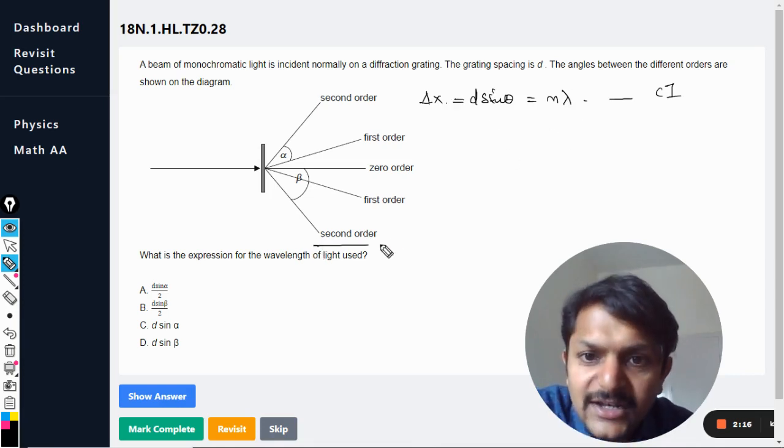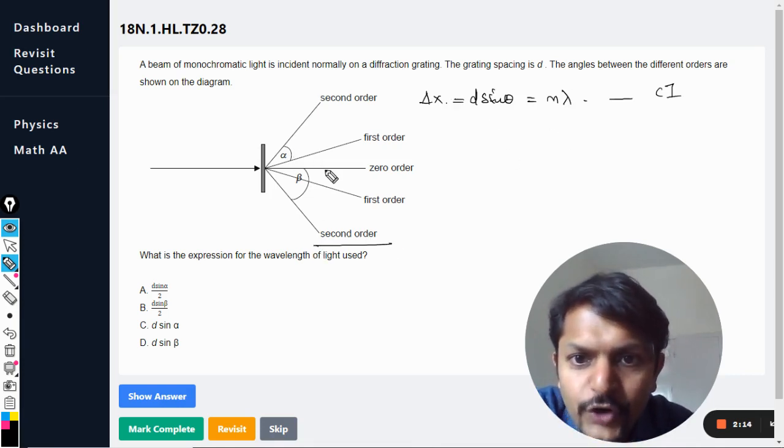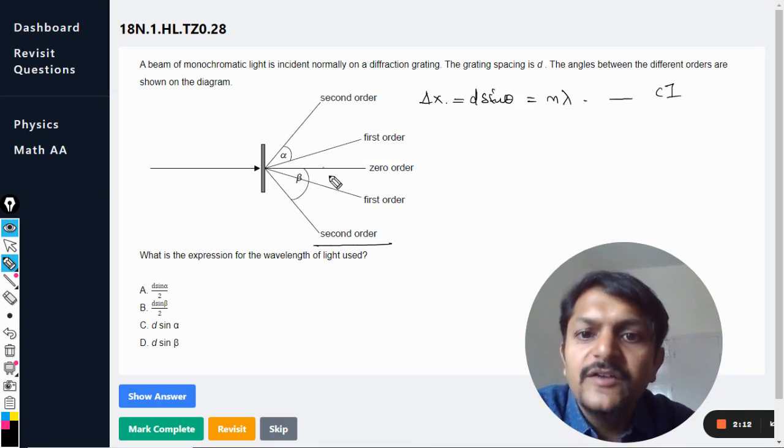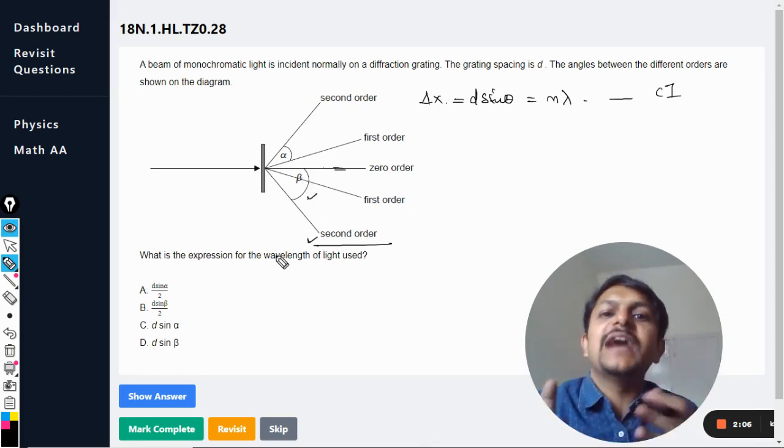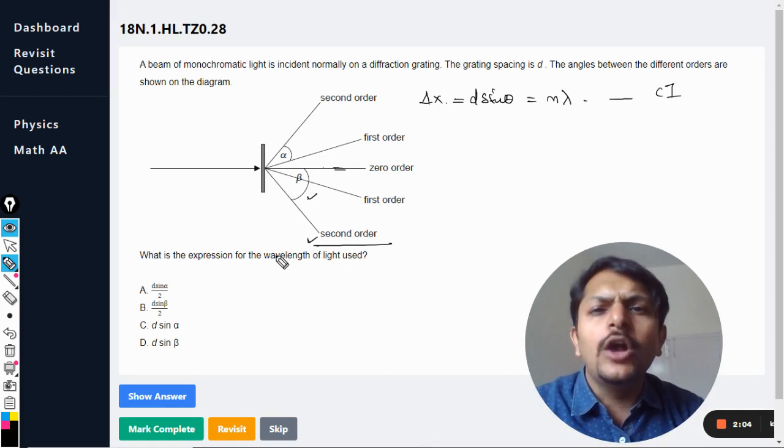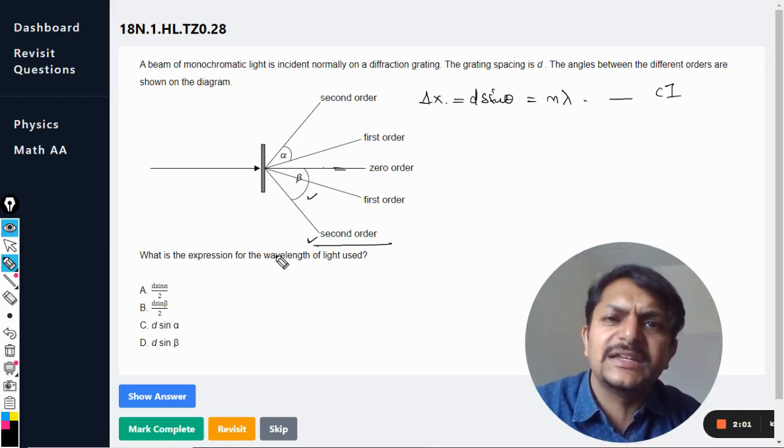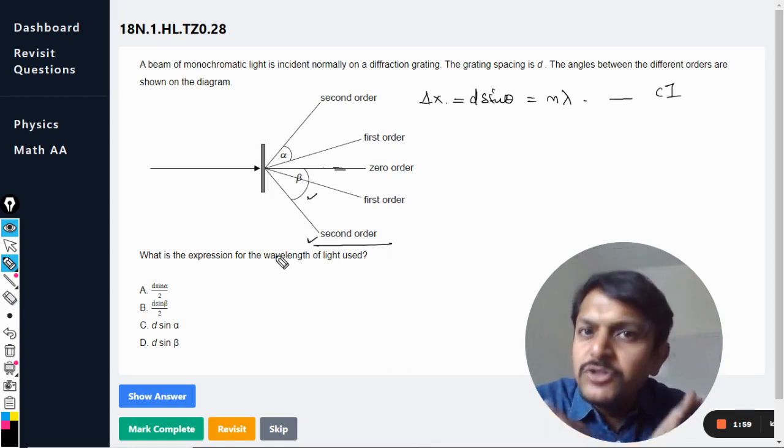I think you will not be having any problem in this. As per the interference is concerned, from here we are going to use lambda second order. Now you see, this alpha is not from zero order. We want an angle which is starting from the central maxima, that is zero order, and that is beta. So we would be talking about the second order.